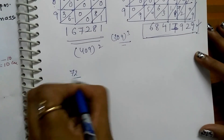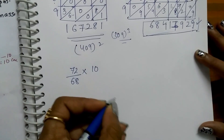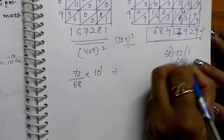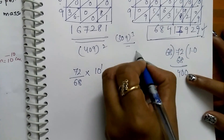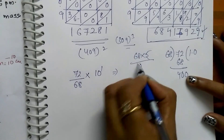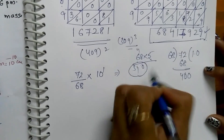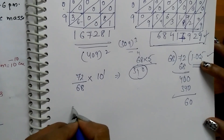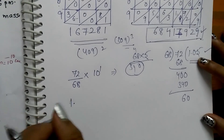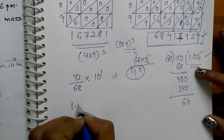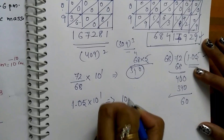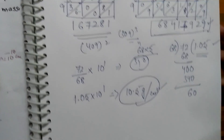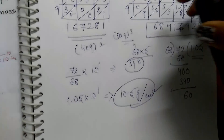So 72 divided by 68 with 10⁻¹ in the denominator means 10¹ in the numerator, giving 68 into 72.0. 68×1=68, remainder 4.0; try 68×5=340, so 0.5 something; 68×5=340... after decimal, 2 digits are enough. Unless the options are very close, you only need 2 decimal places. So we get 1.05 × 10¹, which is around 10.5. Density is mass per volume, with units grams per cubic centimeter. So 10.5 g/cm³ is the answer for this question.